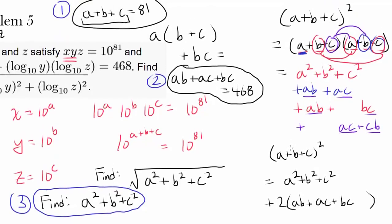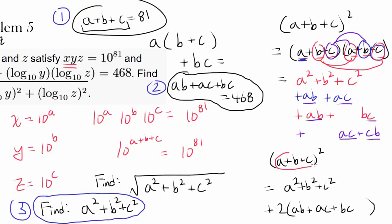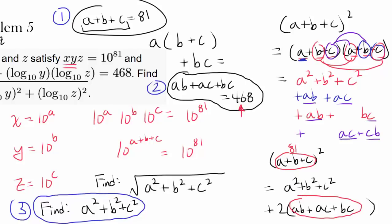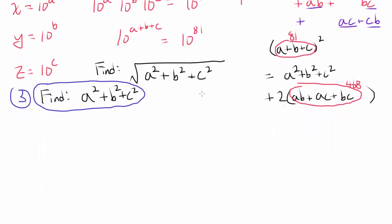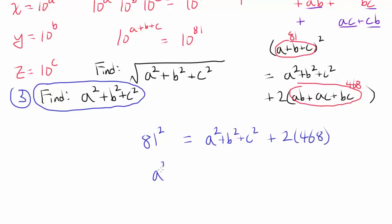We already know a plus b plus c equals 81, we want to find a squared plus b squared plus c squared, and we know ab plus ac plus bc equals 468. So: 81 squared equals a squared plus b squared plus c squared plus 2 times 468. Therefore, a squared plus b squared plus c squared equals 81 squared minus 2 times 468, which equals 6561 minus 936.